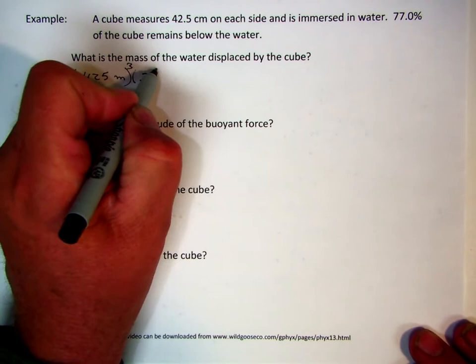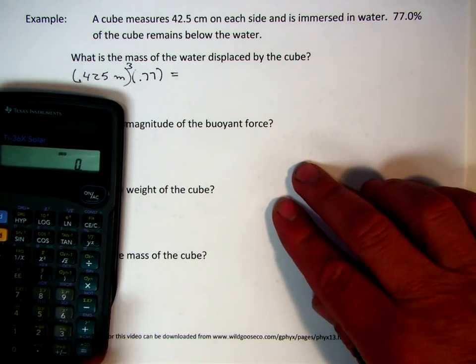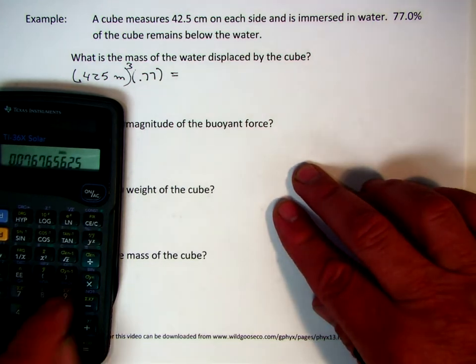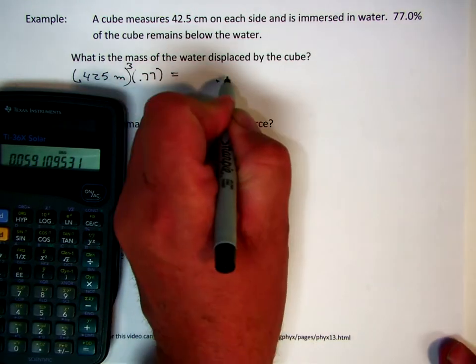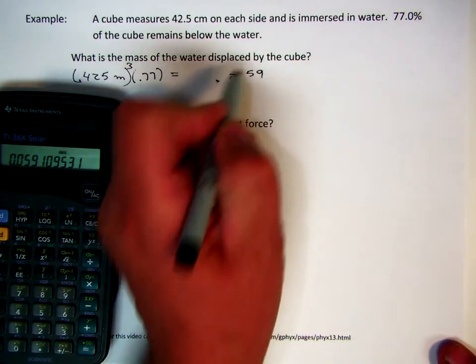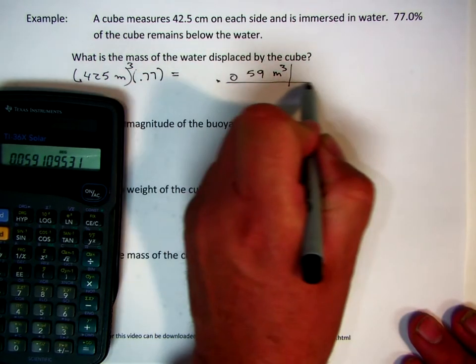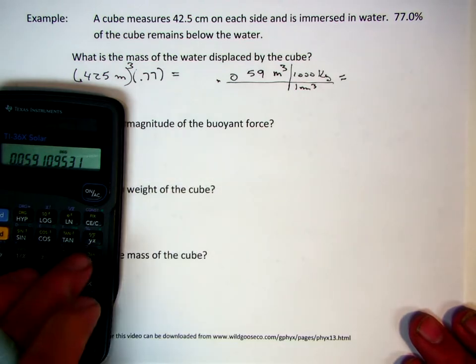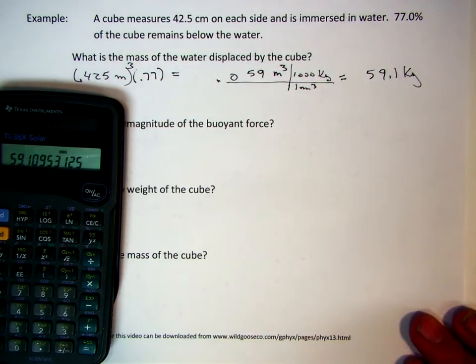Now, we also said that 77% of that was below the water. So, we're going to multiply that by 0.77 to get the part that's underwater. So, using that we're going to take 0.425 y to the x3 gives me the cubed value of it times 0.77 gives me a volume of 0.059 meters cubed. So, now if I take that and I multiply it by the density of water, 1 meter cubed is equal to 1,000 kilograms times 1,000. I have 59.1 kilograms as the mass of the water that we replaced.